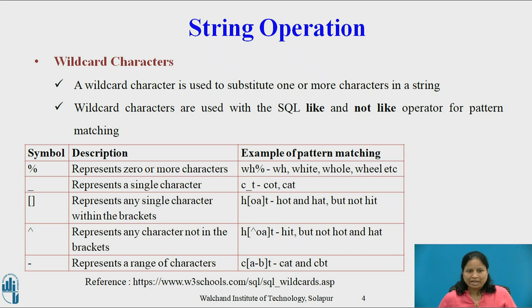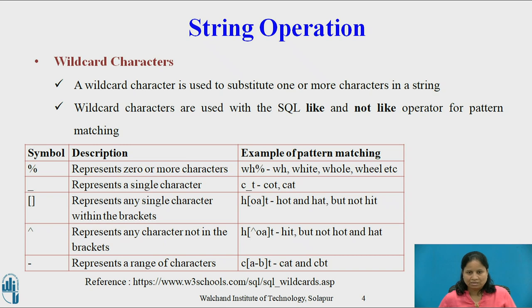The symbol opening and closing square brackets represent any single character within the brackets. For example, 'H[OAT]' finds 'hot' and 'hat'. The symbol caret (^) represents any character not in the bracket — 'H[^OAT]' finds 'hit' but not 'hot'. The symbol hyphen (-) represents a range of characters, so 'C[A-B]T' finds 'cat' and 'cbt'.